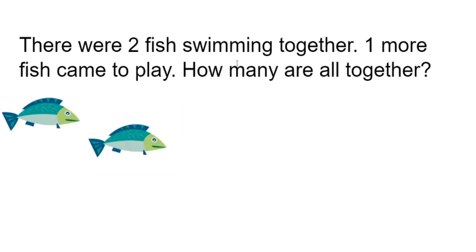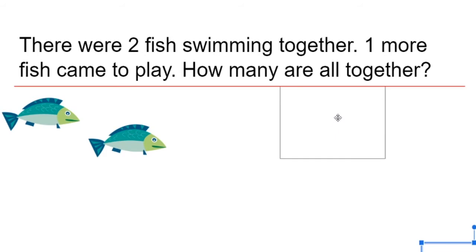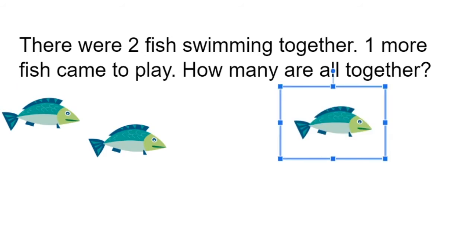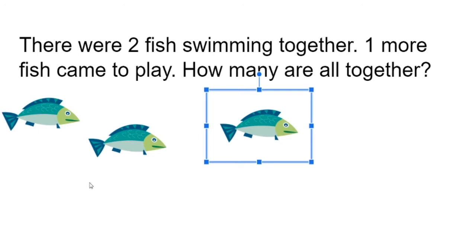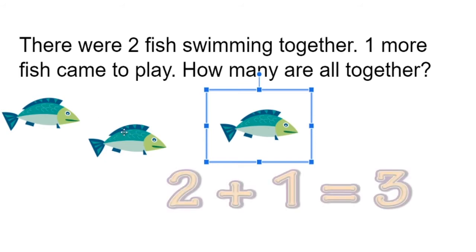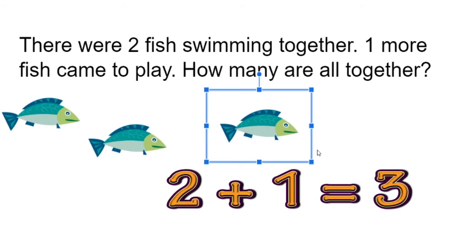Two fish were swimming together. One more came to play. How many are all together? One fish joins. So we count: one, two, three.